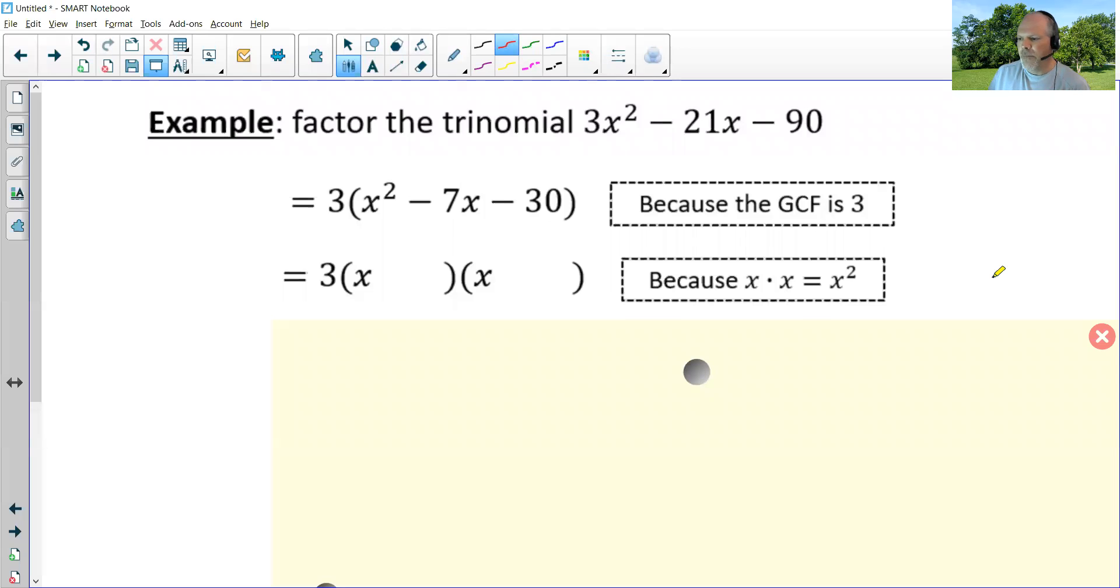So what are all the factors of 30? Well, there's a lot of them. We could do one times 30, two times 15, we could do three times 10, and we could do five times six. So we need to find a pair of factors that when we put pluses or minuses with them, they will add up to or combine together to equal negative seven. So again, we're looking for factors of this number, 30. And you can even ignore the signs for the time being. But we need factors of 30 that can combine together to give you negative seven.